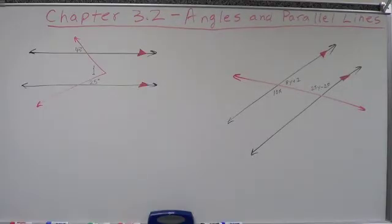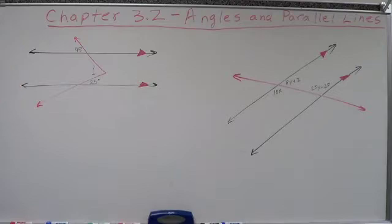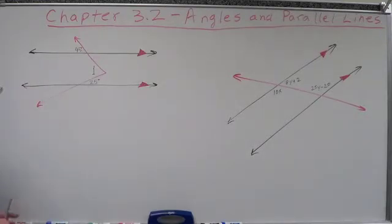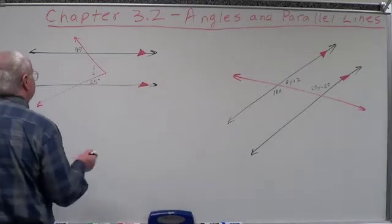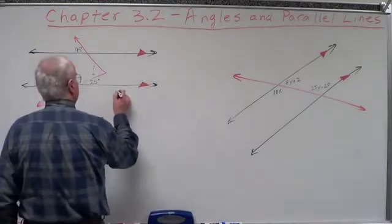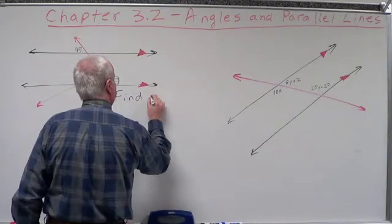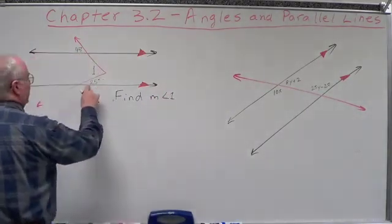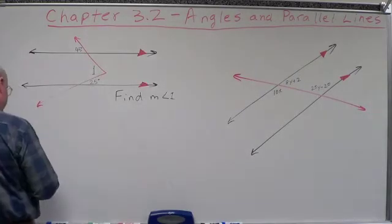Now we're going to take the information we've been given and use it to solve a couple of sample problems. They're not tremendously difficult, but they'll give you an idea of the kinds of things we can do. The first one is a classical little puzzle. We have two parallel lines cut by actually two transversals, and we're asked to find angle 1. Given that this angle right here is 25 degrees and this angle right there is 45 degrees.